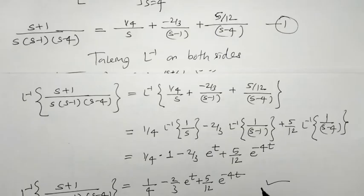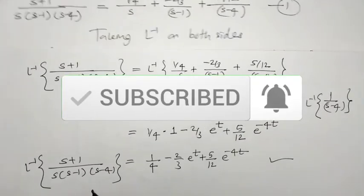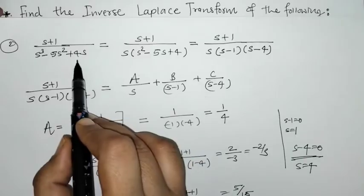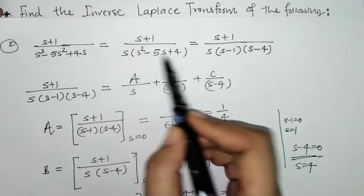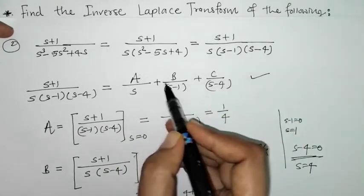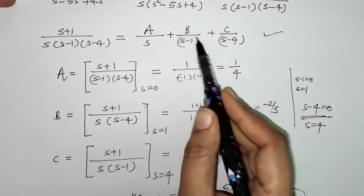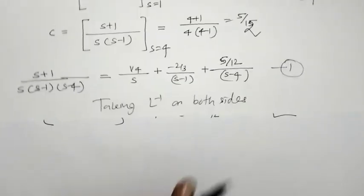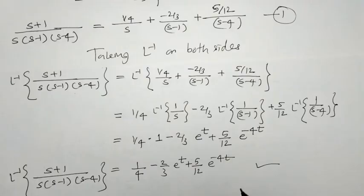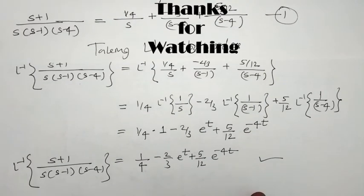This is the required inverse Laplace transform of the given function. We factorized the denominator into three linear non-repeated factors, resolved into partial fractions, found the values of A, B, C, and then found the required Laplace inverse. That's it for now. See you in the next video. Thank you, keep watching.